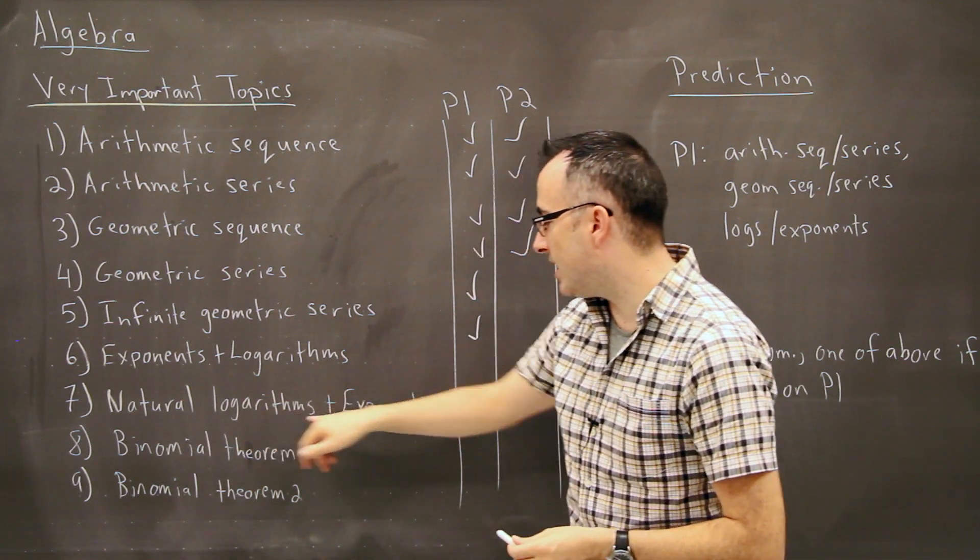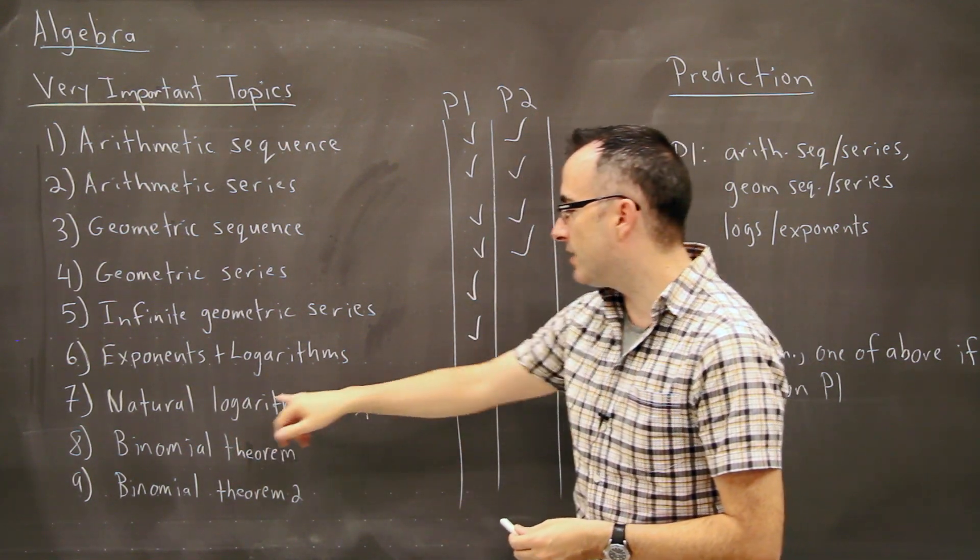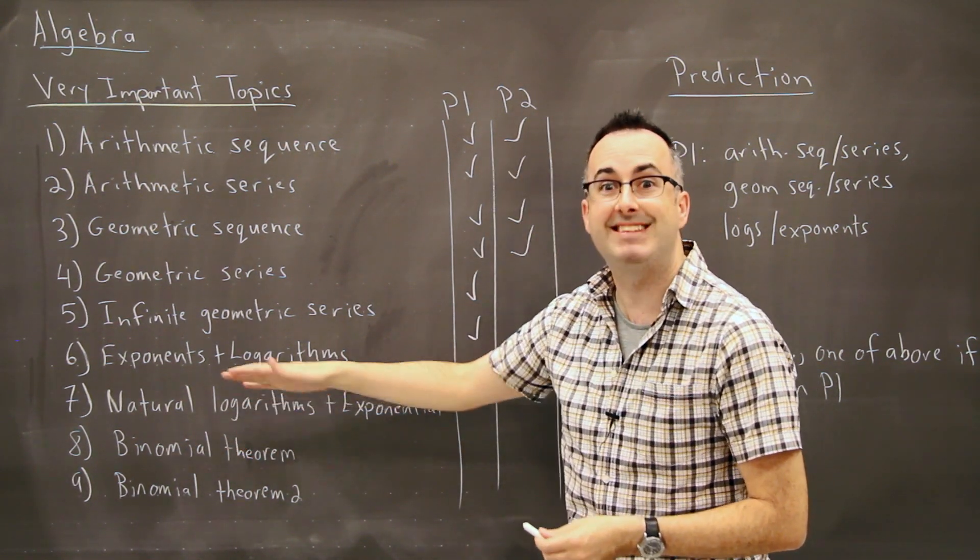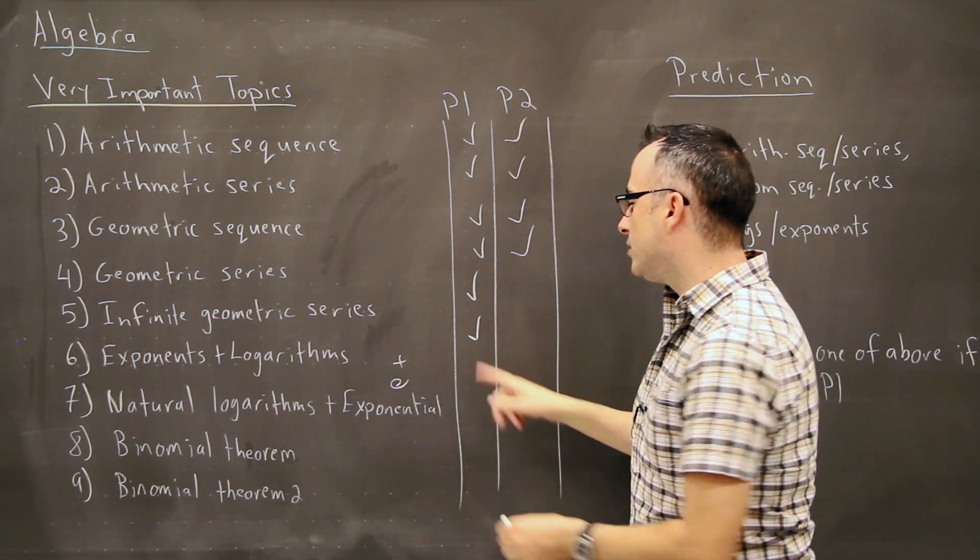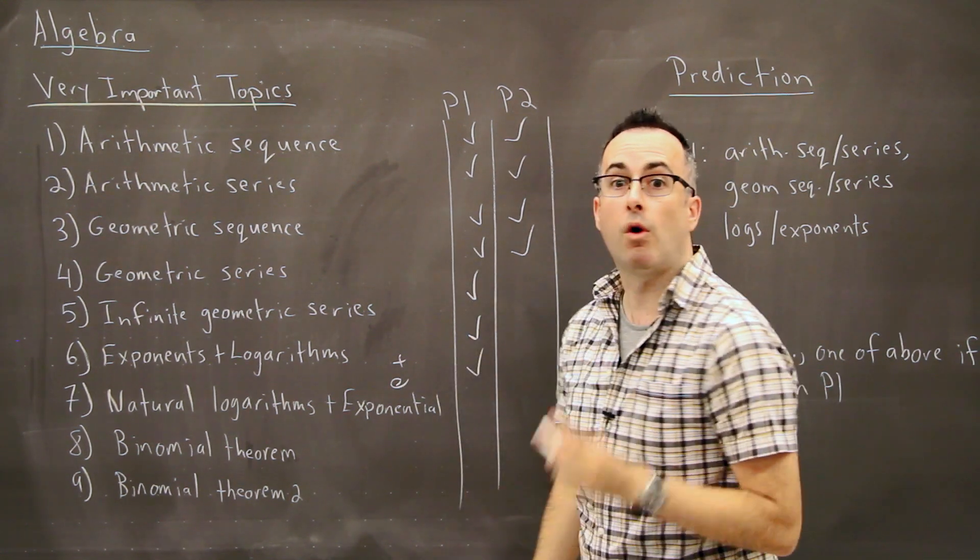We also have Natural Logarithms and Exponential Functions. Remember, Natural Logarithms are just a log of base e, which is this exponential function, and that's this e to the x. And those also show up very often on Paper 1.